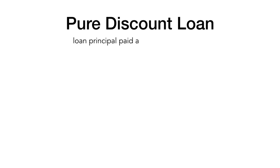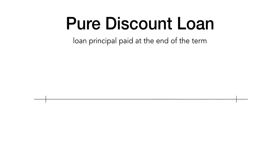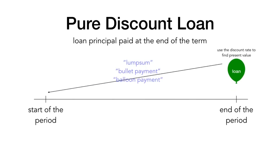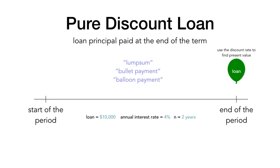There are three types of loans that can be made. The first is the pure discount loan. This loan requires that the principal amount must be paid at the end of the term in one payment, sometimes referred to as a lump sum, a bullet payment, or a balloon payment. To find the present value of a pure discount loan, we simply discount the future value principal back to today using the appropriate discount rate. For example, let's say you agreed to pay back a loan of $10,000 two years from now. If the annual interest rate is 4%, what is that $10,000 worth today? Pause the video here to calculate the present value of the loan yourself.